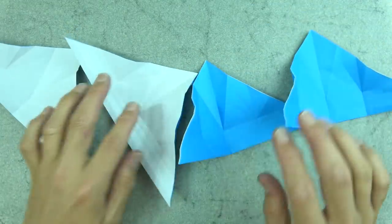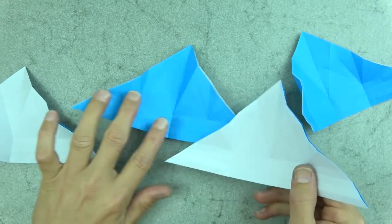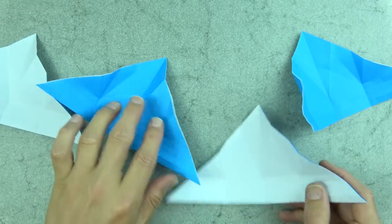Alright, so all four units are complete. Let's orient them so that they all face the same direction and let's alternate them. So we have white, blue, white, blue, or whatever colors you're using.